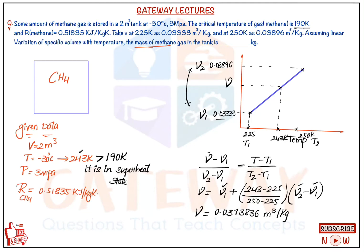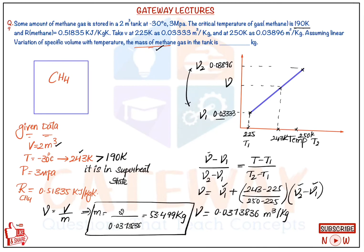Since specific volume equals total volume divided by mass, and the container volume is 2 m³, the mass is equal to 2 divided by 0.0373836, giving a mass of 53.499 kg. So at the given condition, the methane gas has a mass of 53.499 kg. This is a straightforward question — the key concept is applying linear interpolation, which becomes easy with a few practice problems.